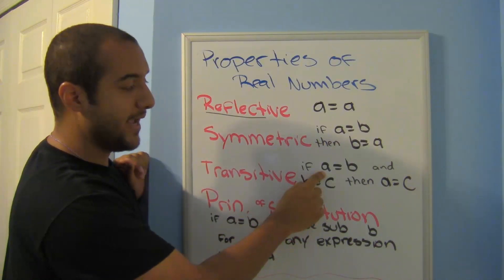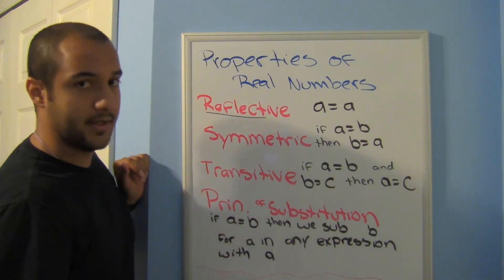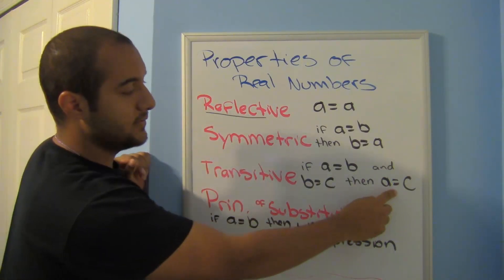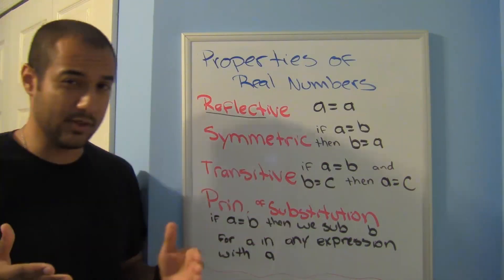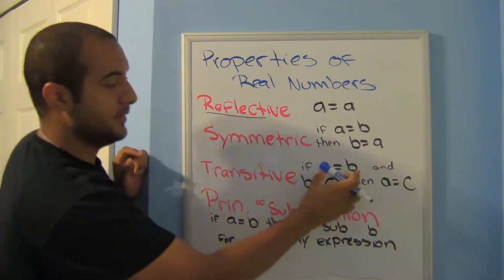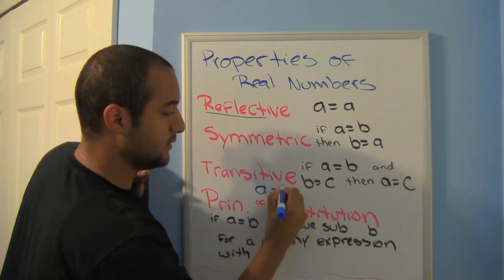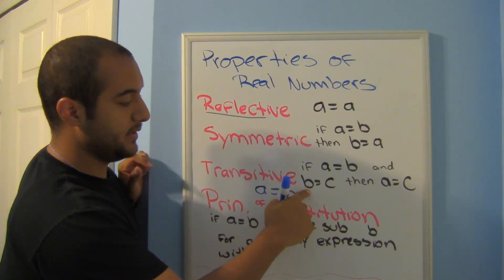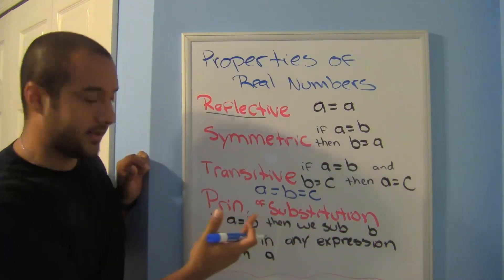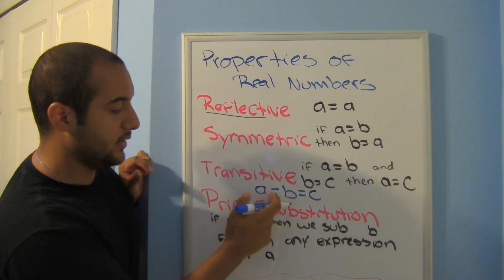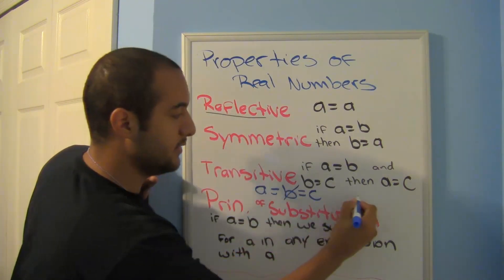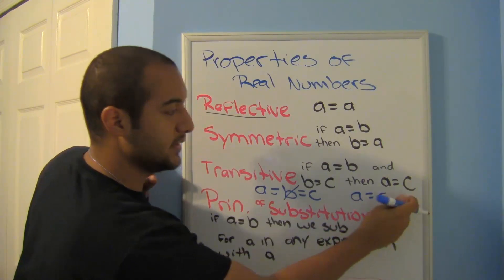The transitive property says: if a is equal to b, and b is equal to c, then a is equal to c. You can look at it almost like substituting. If a equals b, and b equals c, string everything together: a equals b equals c. We don't need that middleman — take it out and we know that a is equal to c.